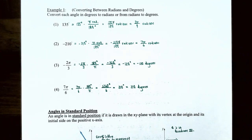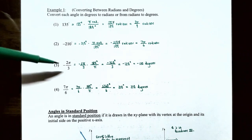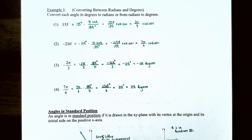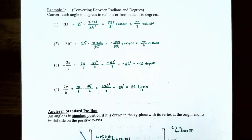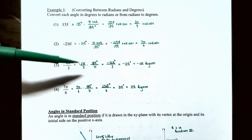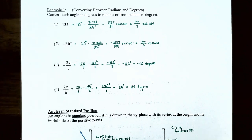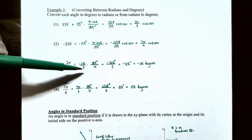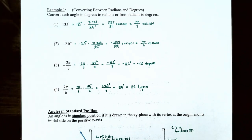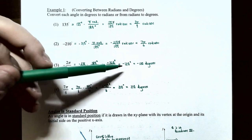Number three: convert negative 2 pi over 3 radians to degrees. Take negative 2 pi over 3 and multiply by 180 degrees divided by pi. The pi's cancel, giving negative 2 times 180 divided by 3, which simplifies to negative 360 divided by 3, or negative 120 degrees.